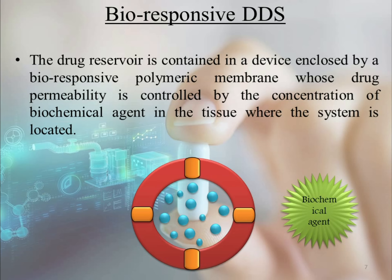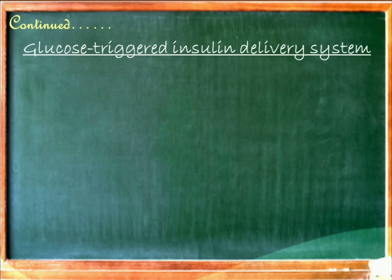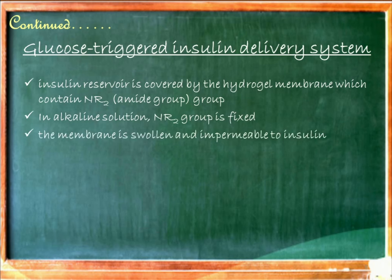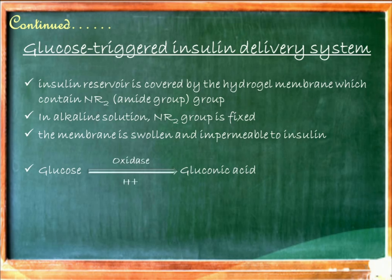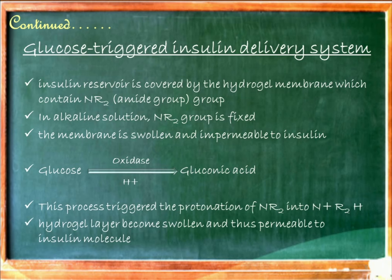The example of bioresponsive drug delivery system is the glucose triggered insulin delivery system. This system shows that the insulin reservoir is covered by a hydrogel membrane composed of amide groups, which are stable in alkaline solution. The hydrogel membrane is swelling and impermeable to insulin initially. Glucose is transformed into gluconic acid in the presence of oxidase enzyme and H+ ions. This process triggers the protonation of the amide group into N+R2H. The hydrogel layer then becomes swollen and permeable to the insulin molecule.